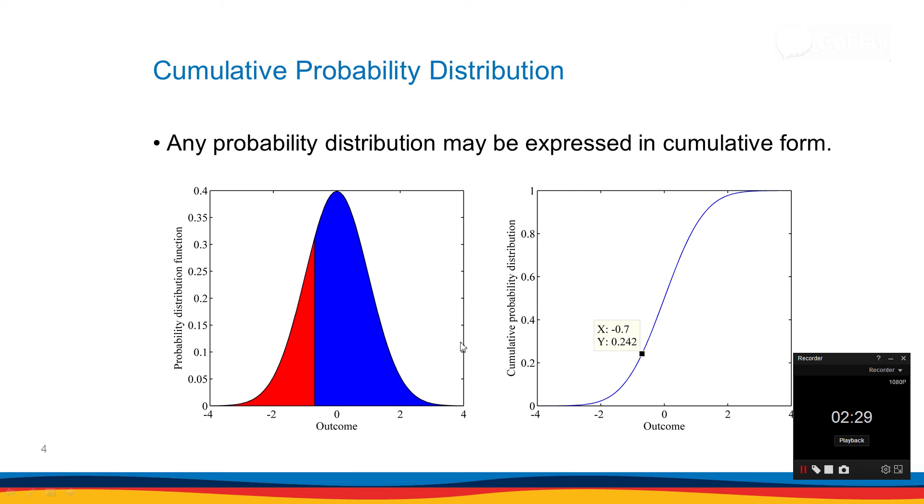Another example: x is minus 0.7 and y is 0.24 or 25%. What does that mean? It means 25% of the numbers is below minus 0.7 and 75% is above. So that's the meaning of cumulative probability distribution.